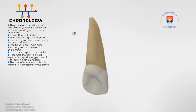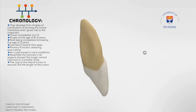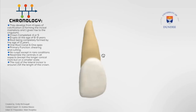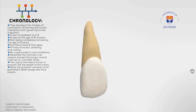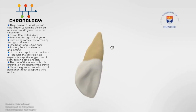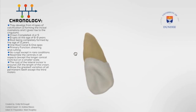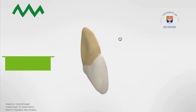The root of the lateral incisor is around 1.5 times the length of the crown. They show the greatest variation of all permanent teeth, except the third molars. In this video, we'll be looking at the morphology from different viewing aspects.